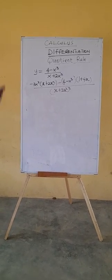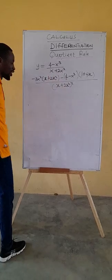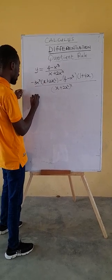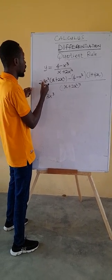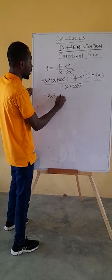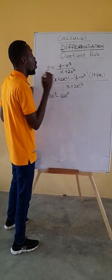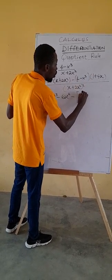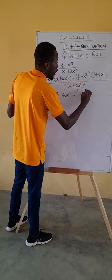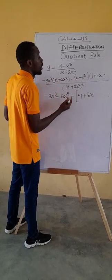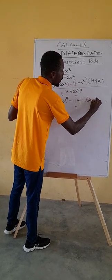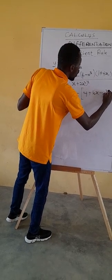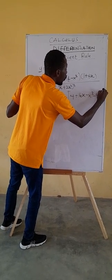Now we expand: minus 3x squared times x gives minus 3x cubed; minus 3x squared times 2x squared gives minus 6x to the fourth. Then expanding minus (4 minus x cubed)(1 plus 4x): 4 times 1 is 4, 4 times 4x is 16x, x cubed times 1 is x cubed, and x cubed times 4x is 4x to the fourth.